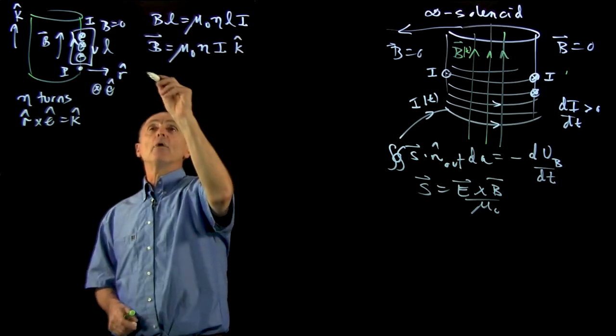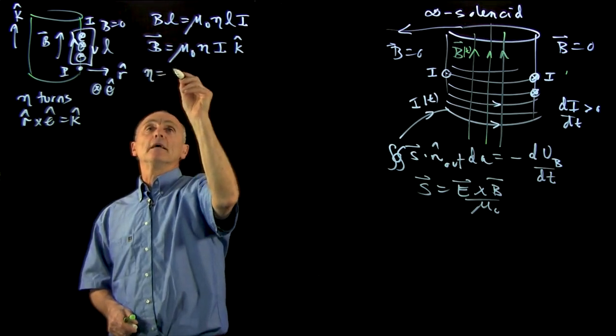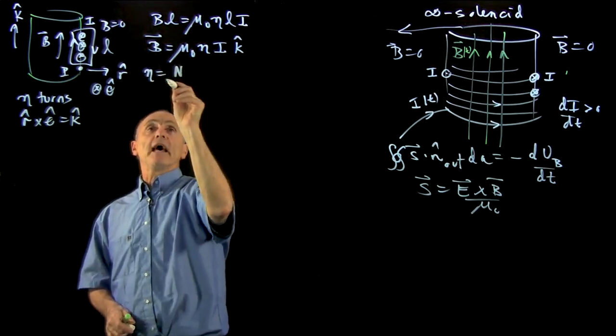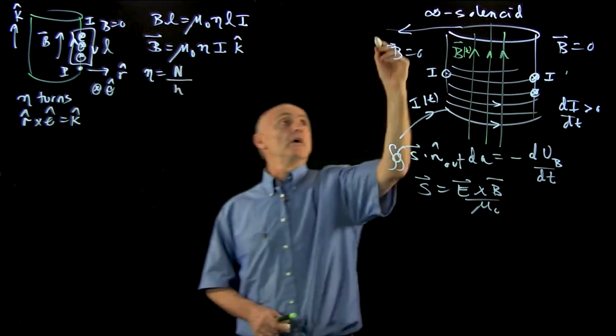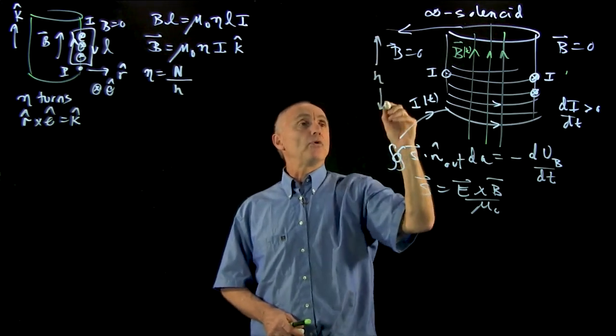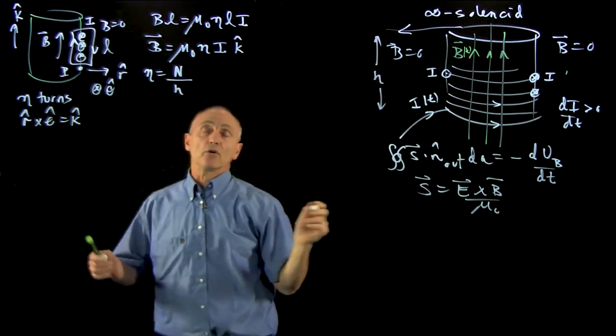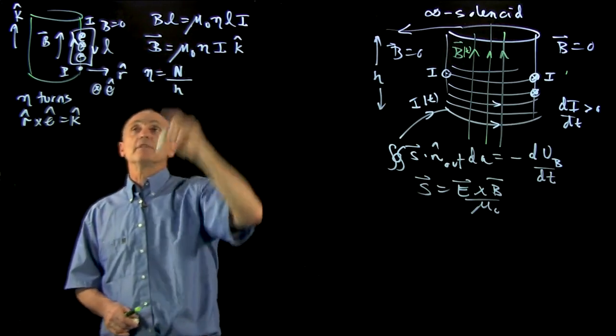We can write, where we're neglecting edge effects, n as the total number of turns divided by the length of the whole solenoid. In this case, we could call it the height, but we'll leave it that way.